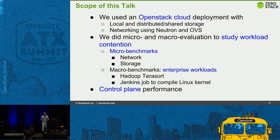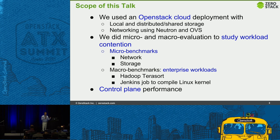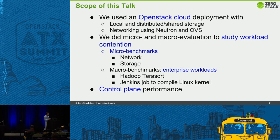For macro benchmarks, we run workloads that stress a whole bunch of resources, for example Hadoop and Jenkins. These workloads stress different resources at different times, so they are not focused on just one resource. Another very interesting metric is control plane performance itself — as you make API calls and have more objects in the system, how does control plane performance change? We need more improvement in making it scale less with the number of objects and entities in the system.